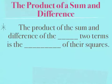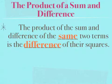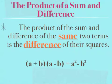The next thing we need to talk about is the product of a sum and a difference. The product of a sum and difference of the same two terms is going to be the difference of their squares. So if I have a plus b times a minus b, that's going to be equal to a squared minus b squared.